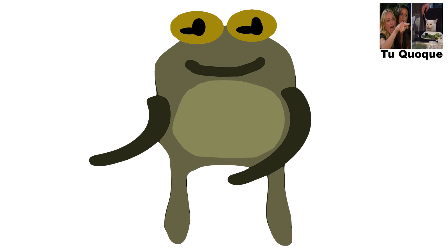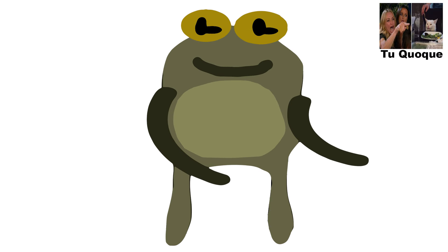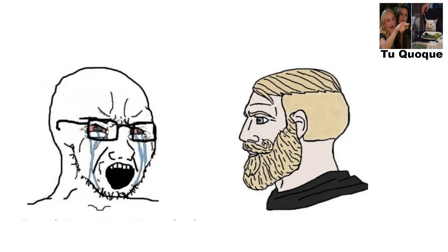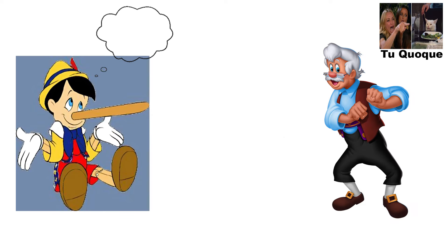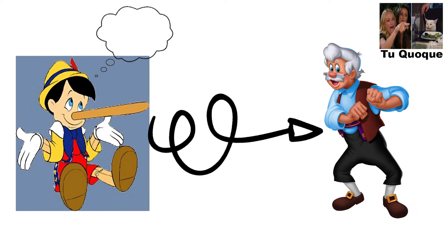Tu quoque fallacy. The tu quoque fallacy — or as I like to call it, 'you too' — occurs when someone deflects criticism by accusing the critic of the same problem. For example, you say I shouldn't lie, but you lie all the time — sidesteps the original criticism instead of addressing it.